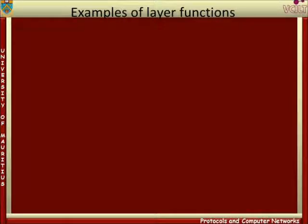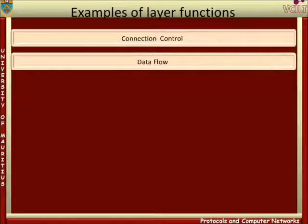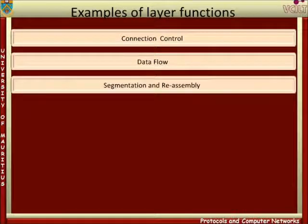These are: connection control, that is, for connection-oriented services, a connection must be established between peer entities. Dataflow, that is, the user data is passed transparently between peer layers by calling on the service of the layer below. If the data received from the higher layer is too large to fit in the maximum size of protocol data unit, the lower layer will have to split it into smaller chunks. This is called segmentation, and additional protocol control information is required to ensure the correct reassembly of the data in the peer layer of the receiving system.